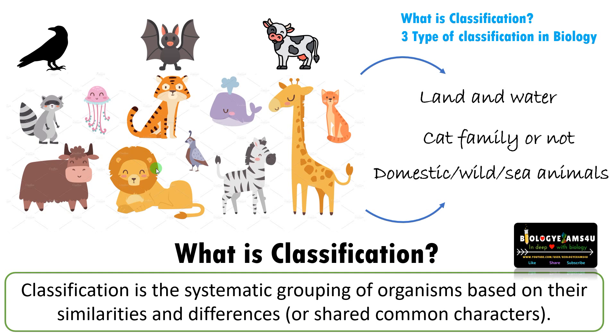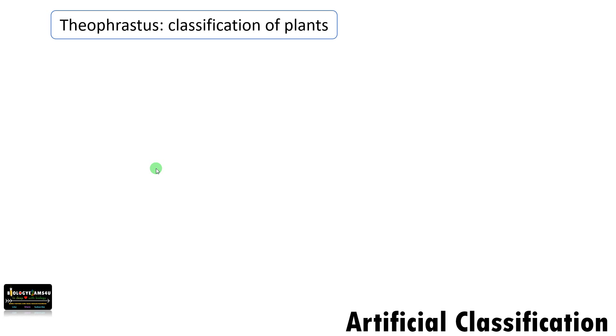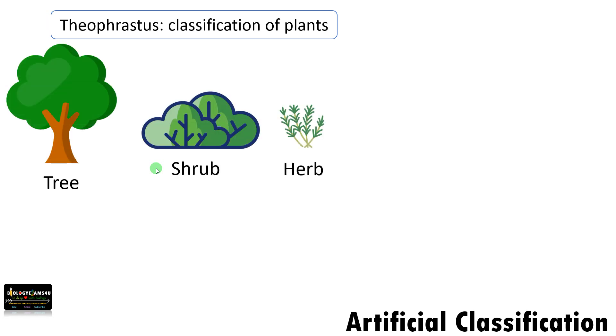Artificial classification, natural classification, and phylogenetic classification in biology. Let's begin with some examples. The first one is artificial classification. Theophrastus classified plants into tree, shrub, and herb. This is called artificial classification, as it takes into account easily observable characteristics — that is, the height of the plant or the habit of the plant.